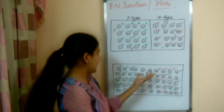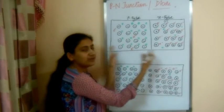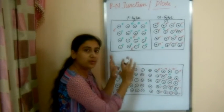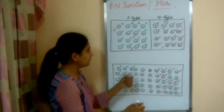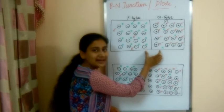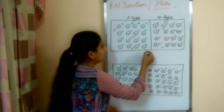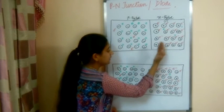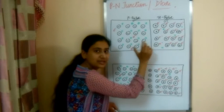We might expect that all holes move toward N-type and all electrons move toward P-type, neutralizing each other completely so all holes and electrons disappear. But in reality this does not happen. What actually happens is that the electrons and holes present near the junction — near the boundary — diffuse toward the other region and neutralize each other there.